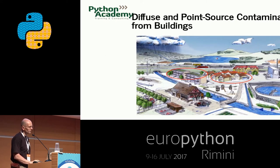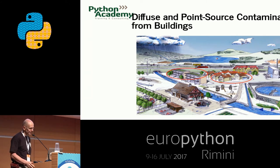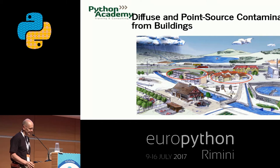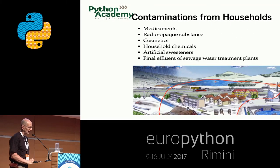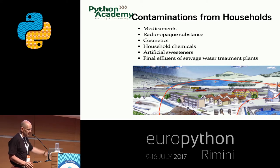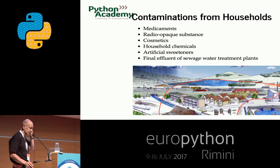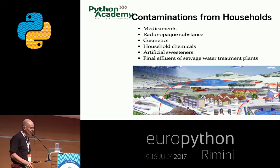The second source is diffuse and point source combinations from buildings — chemicals used for construction and painting, carried by rain into the river. There's also contamination from households: radiopaque substances used in hospitals for X-rays eventually end up in the river. Cosmetics, household chemicals, and artificial sweeteners — which by definition have no calories and are unattractive to microorganisms — don't break down and can accumulate in the environment. Effluent from sewage treatment plants, which are pretty good nowadays but don't remove everything, especially small concentrations, also contributes.